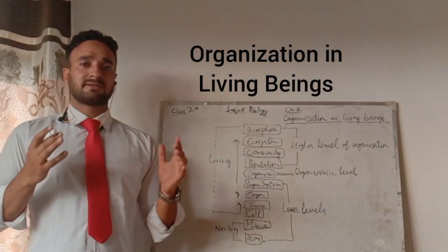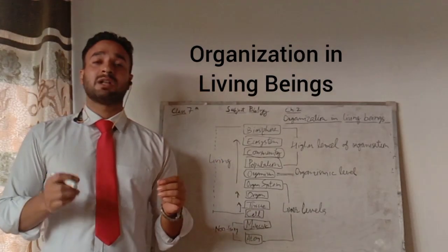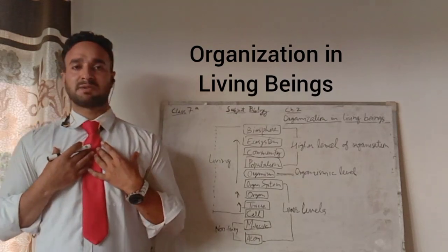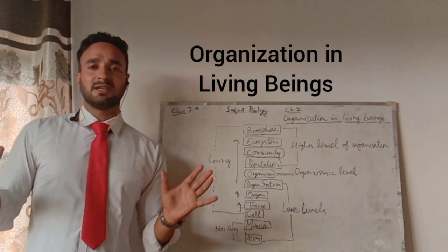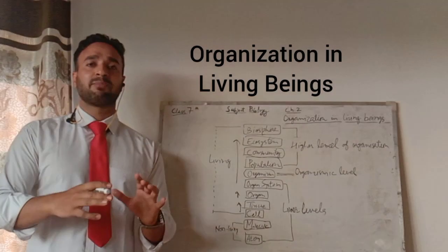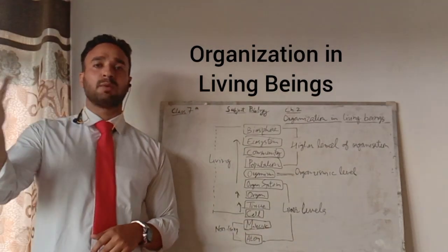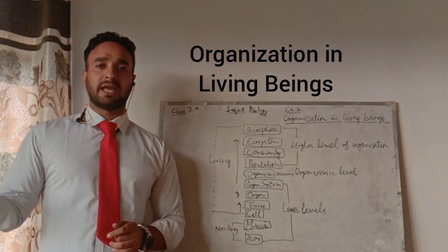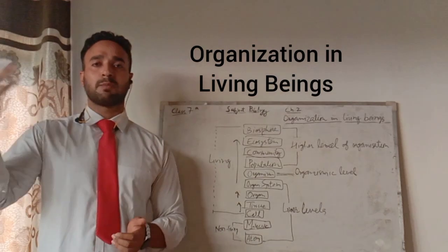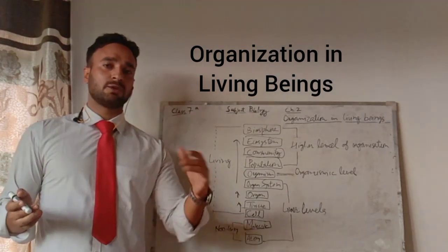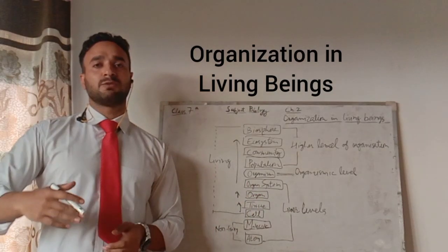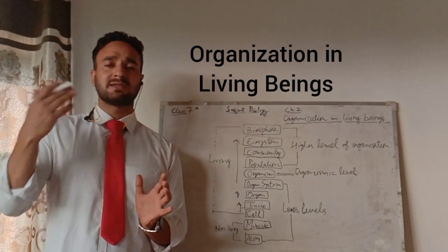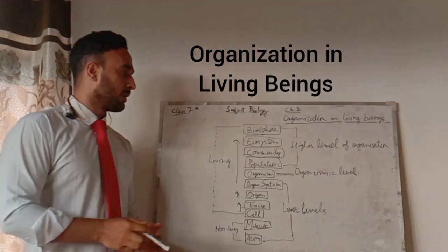When the same group of organisms — we call them a species — lives in a particular area, it is known as a population. Like human beings, we are one kind of species. Human population of Sambal may be around 20 to 30 lakhs. Similarly, dogs in your colony make a separate population and cats make up a separate population. Population is a group of individuals of the same species.